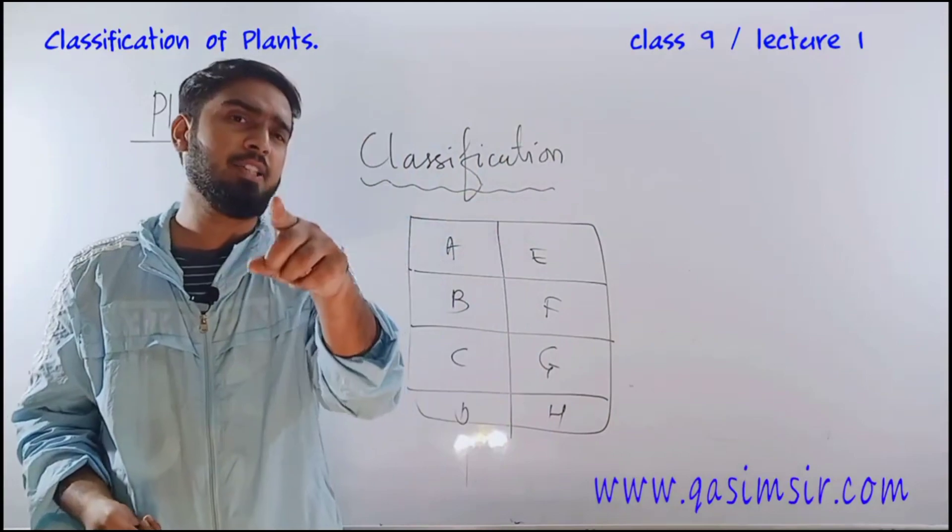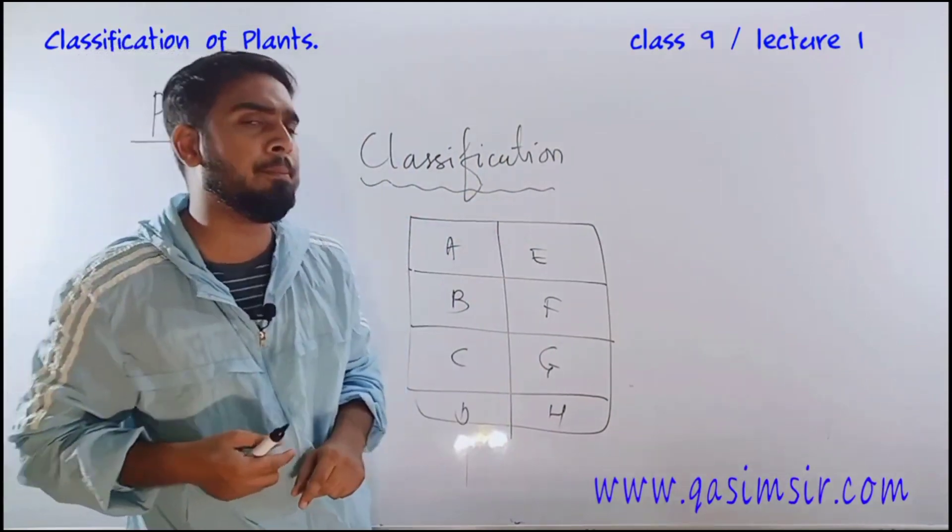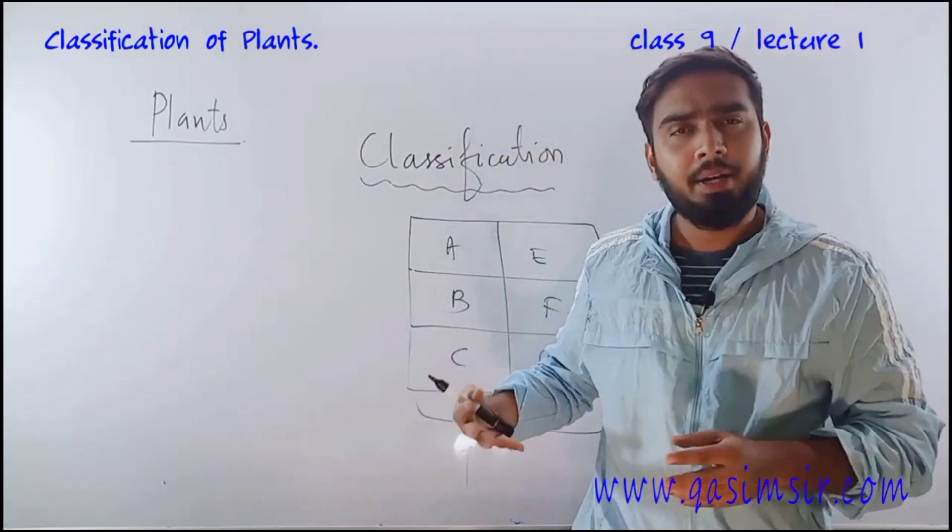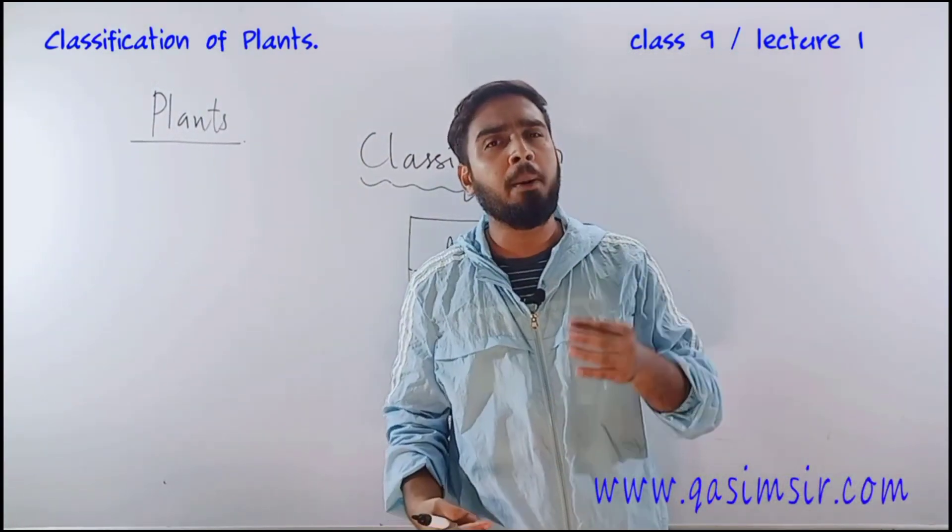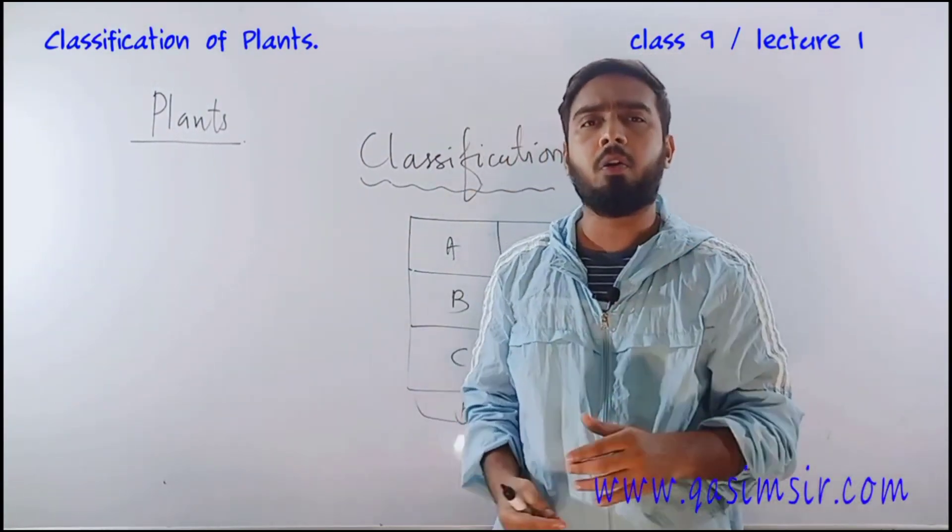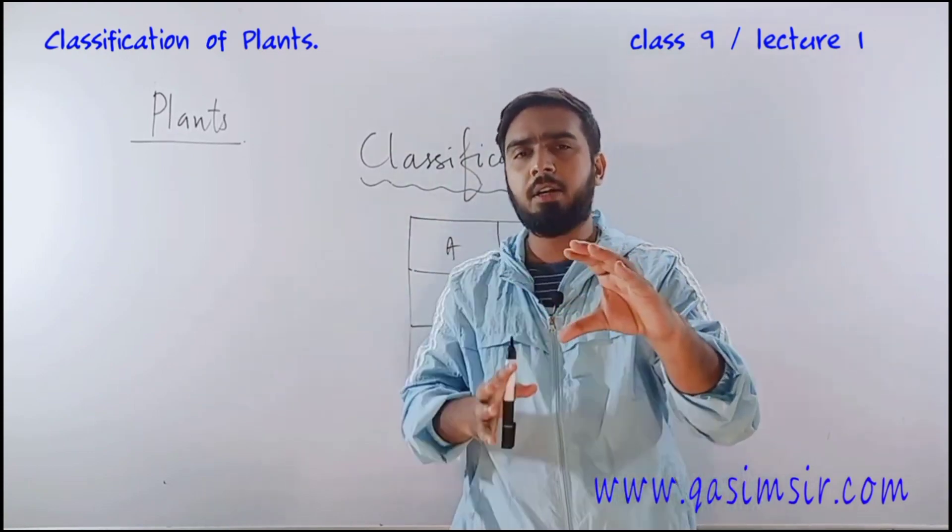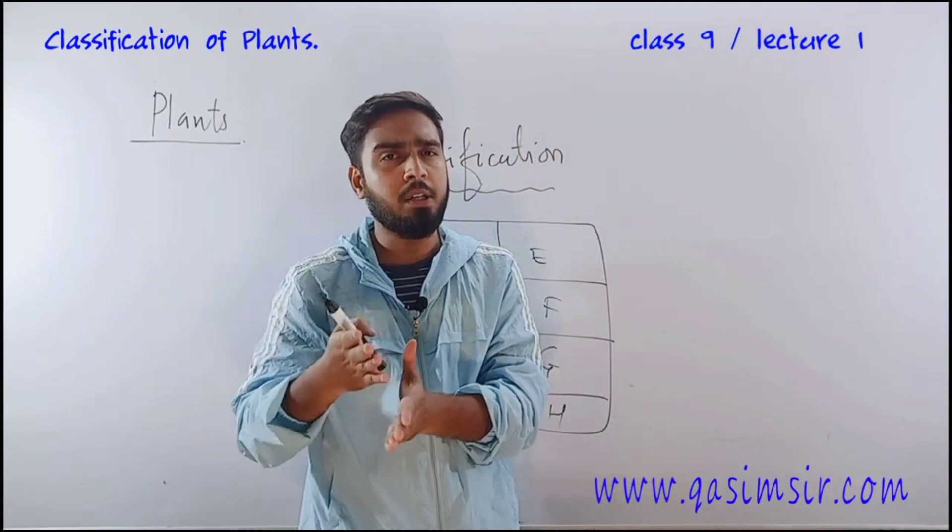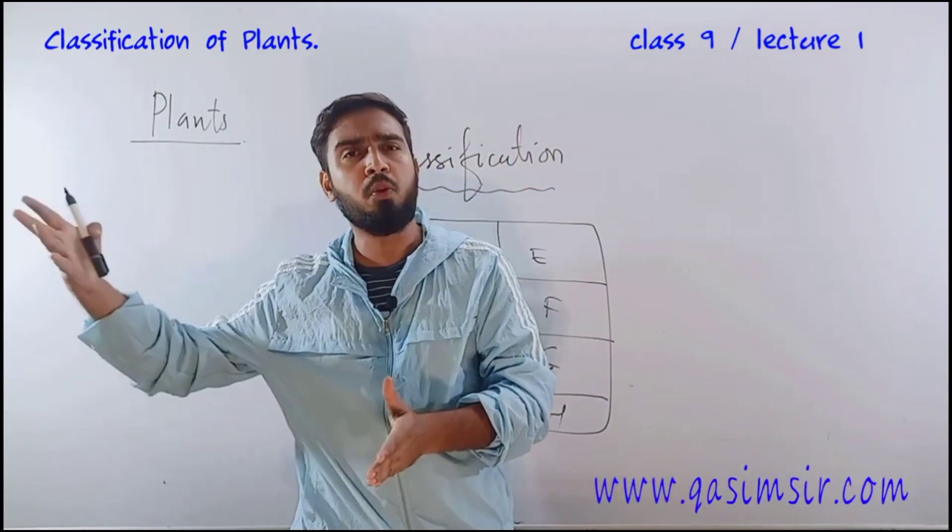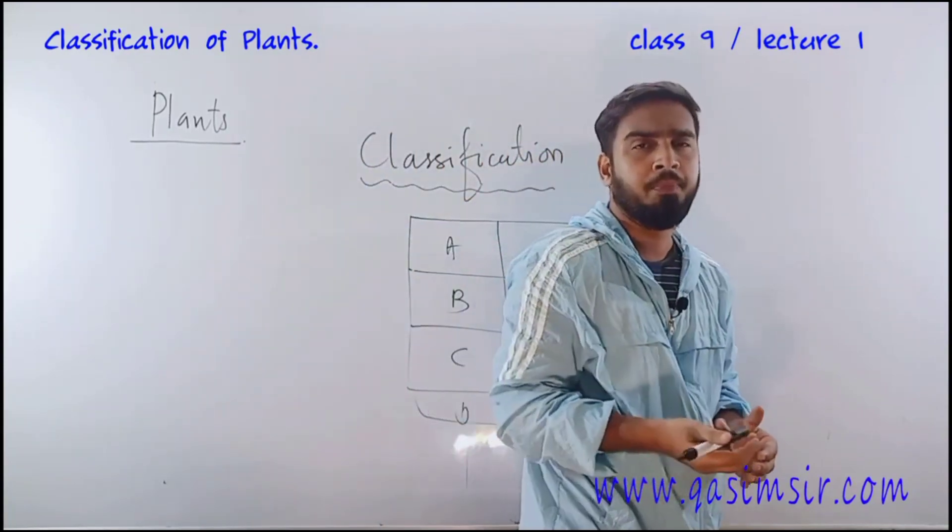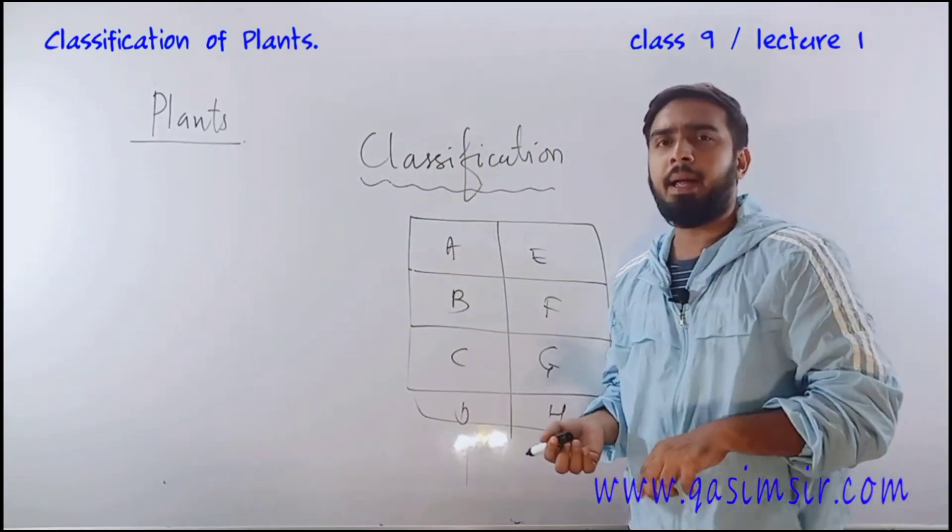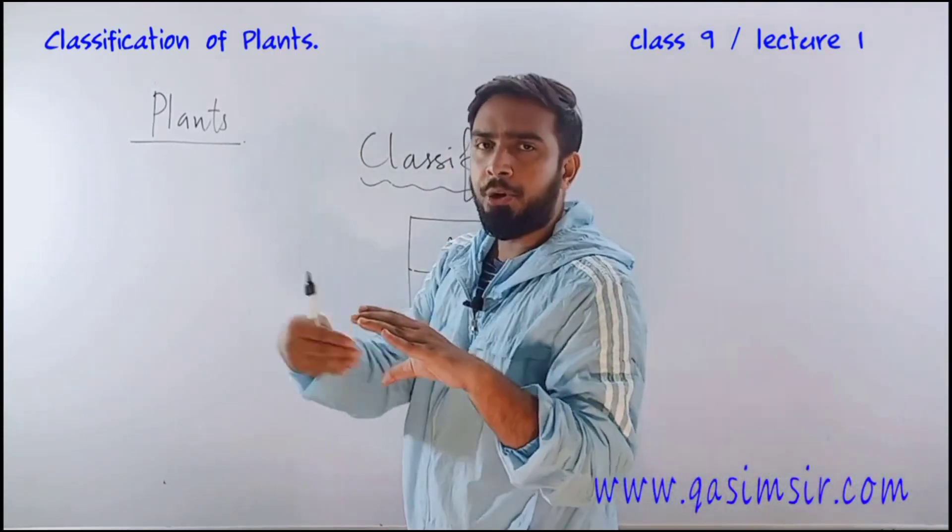Another example I'll give you - in dictionary all the names are presented in alphabetical order. First A section, when A finishes then B section, B finishes then C section, C finishes then D section, D finishes then E section and so on.